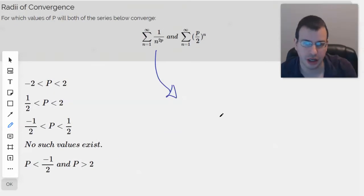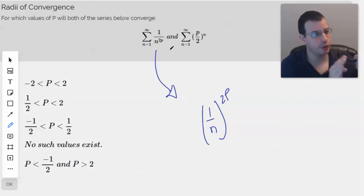We have something along the lines of 1 over N to the 2P. I just moved the 2P to the outside because we can. I can say that 1 is also to the 2P and then top and bottom of the 2P moved to the outside because 1 to any value will be 1.